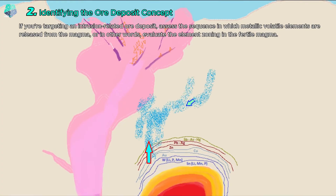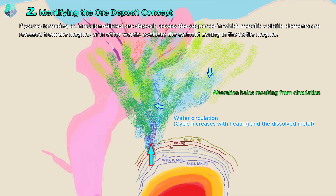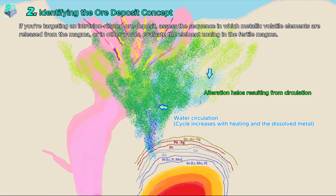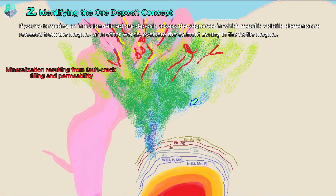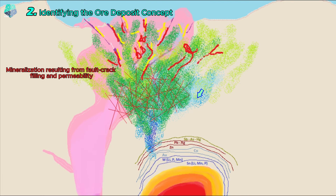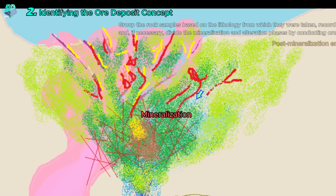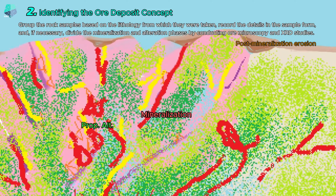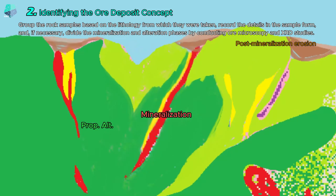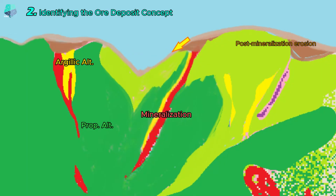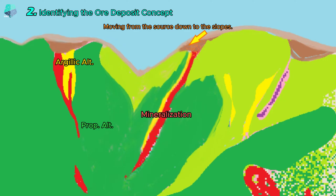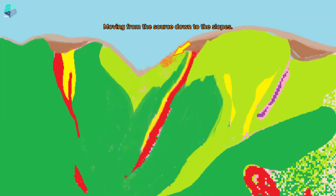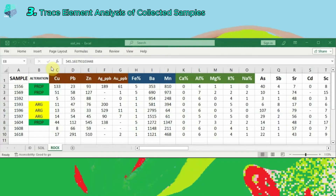If you are pursuing an intrusion-related ore formation, assess the sequence in which metal-bearing volatiles are released from the magma, or in other words, evaluate the element zoning in the fertile magma. Group the rock samples based on the lithology from which you took them, record the details on the sample form, and if necessary, conduct microscopy and XRD studies to categorize the mineralization and alteration into phases. The information you obtain about the origin of the mineralization and the assumptions you make while interpreting this data are of significant importance.